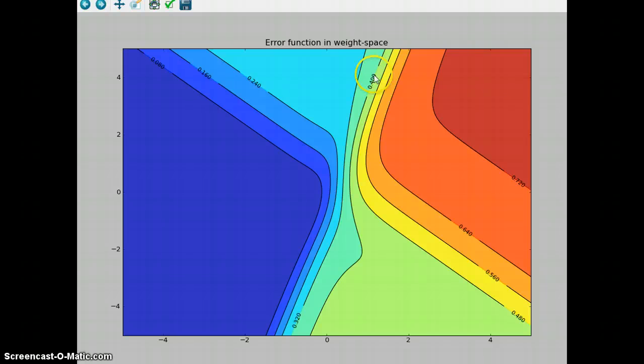Over here you can see 0.720, that's the value of the error function at this particular point in the weight space. So, what is the weight space? The weight space is actually what we're traversing when the backpropagation algorithm is running.